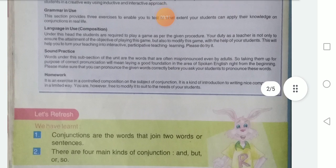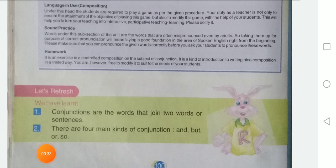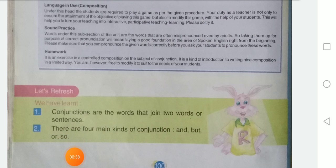Now what is conjunction? Conjunction are the words that join two words or two sentences. Conjunction is a word that joins two names, two sentences, two groups of words. They are called conjunctions.